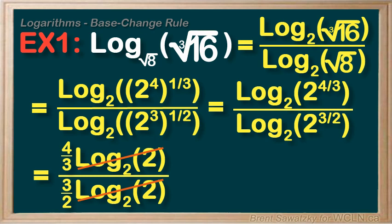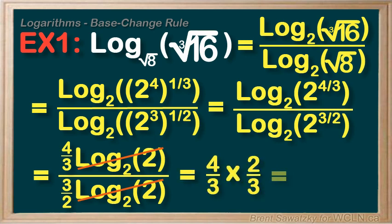If we have a hard time thinking of what this division will look like, we can just flip and multiply. We end up with 8 ninths. So all of that mess and a little bit of rearranging, and we end up with a simple fraction.